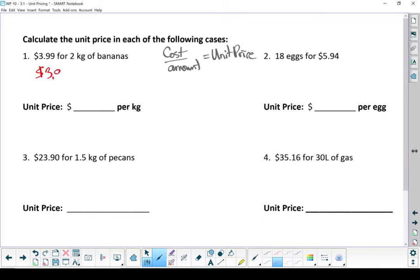For $3.99, we get 2 kilograms of bananas. So take the $3.99 divided by 2 kilograms. Once I round it off, we end up paying $2 per kilogram. For $5.94, we're getting 18 eggs. $5.94 divided by 18 ends up being $0.33 per egg.